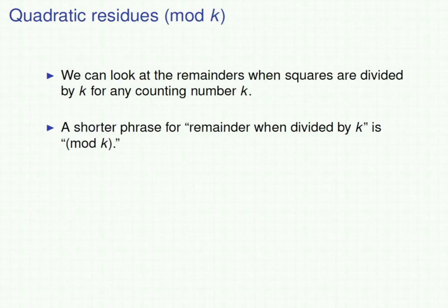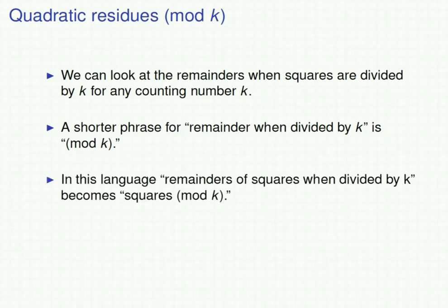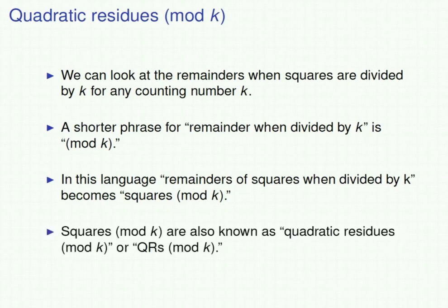That's standard terminology that mathematicians use. In this language, the phrase 'remainders of squares when divided by k' becomes 'squares mod k.' There's another name for squares mod k — they're also called quadratic residues mod k, which can be abbreviated as QRs mod k.